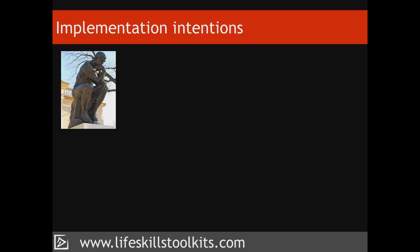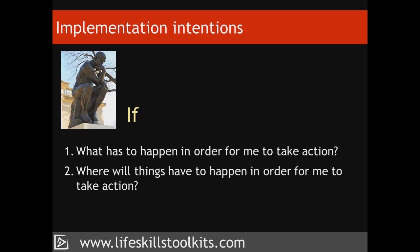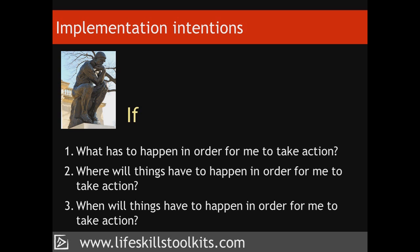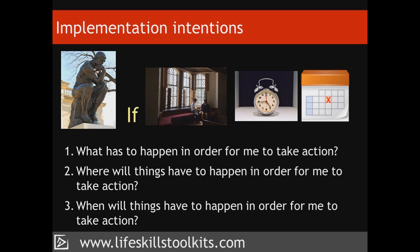Here are some tips on how to form your own implementation intention. When defining the if, ask yourself: What has to happen in order for me to take action? Where will things have to happen in order for me to take action? And when will things have to happen in order for me to take action? Make sure that your answers are specific. For instance, if you intend on taking action in a specific place, have you named that place? Have you specified the exact time and day that you have in mind?